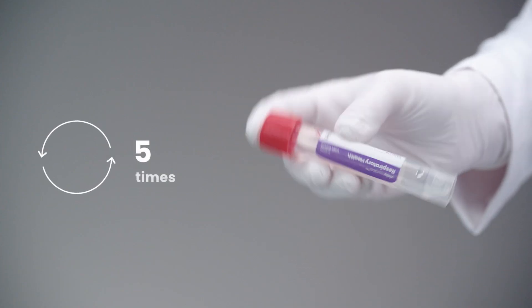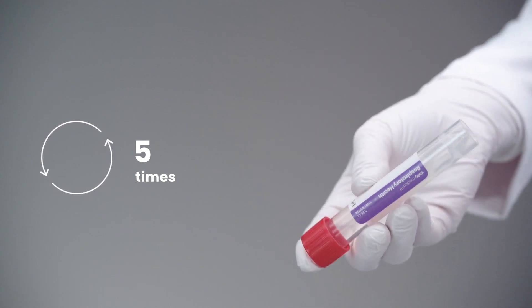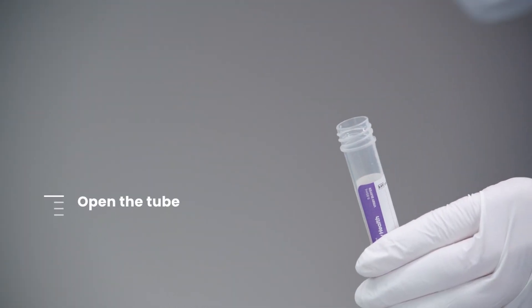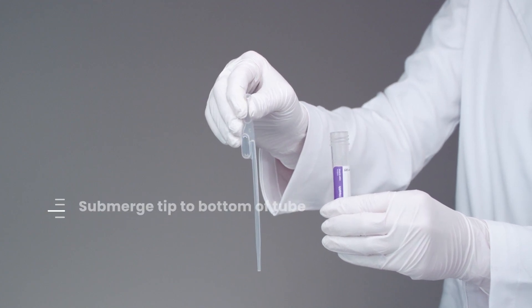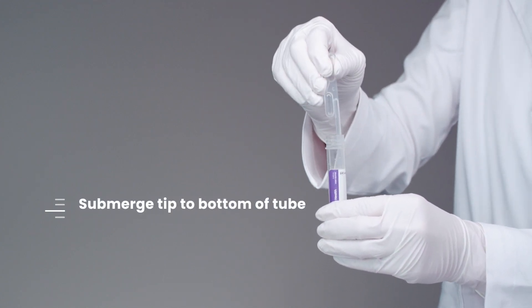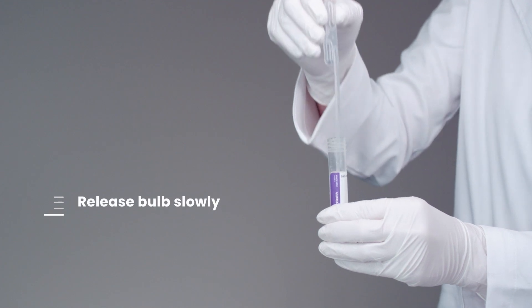Gently invert the patient sample five times to mix. Open the tube. Squeeze the upper bulb of the pipette and submerge the tip to the bottom of the tube. Release the upper bulb slowly to collect the fluid.